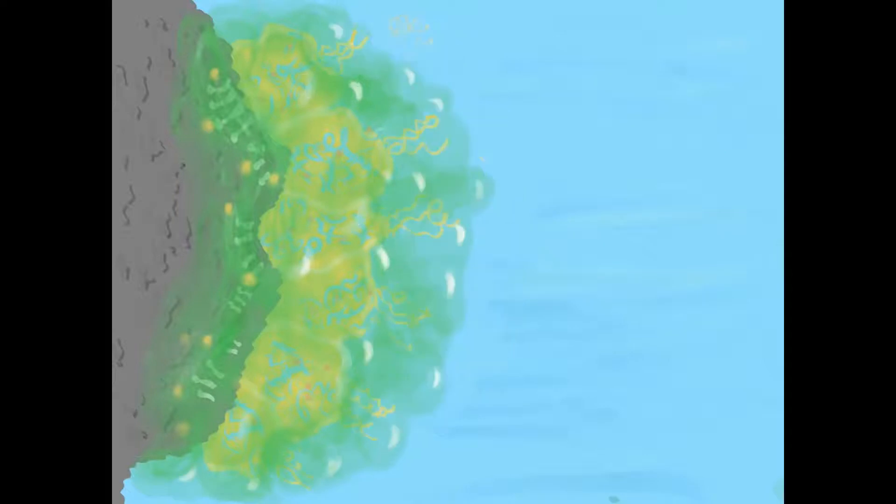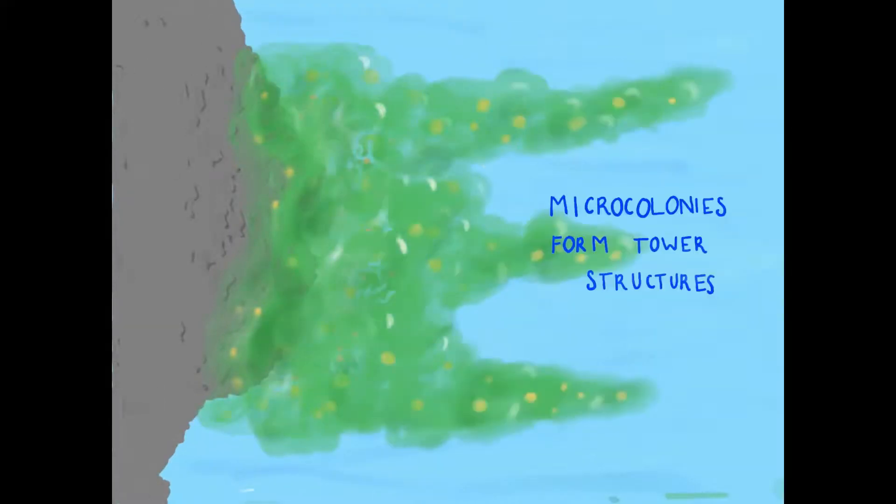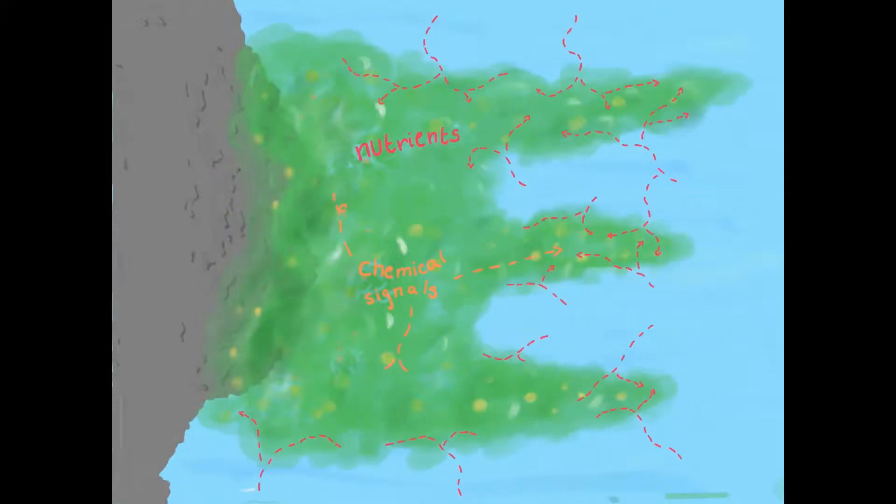It should be noted that these drawings are not to scale. There are millions of cells in the biofilm, which form micro-colonies. These communities then form tower structures. The structures increase the surface area of the biofilm, which means that more nutrients can be absorbed from the surroundings. The colonies control this process using chemical signals to communicate throughout the biofilm.